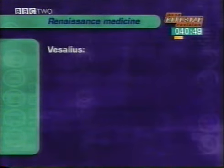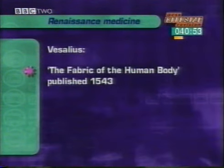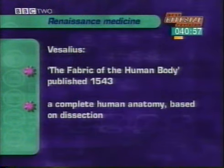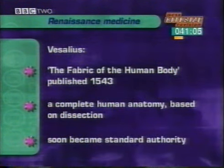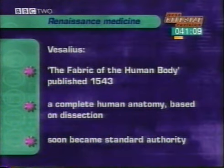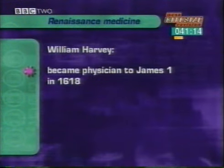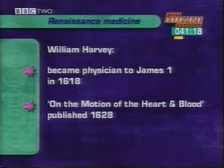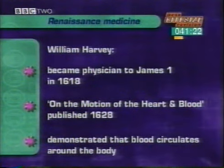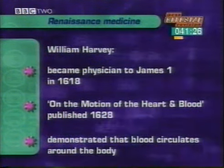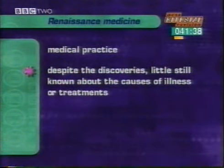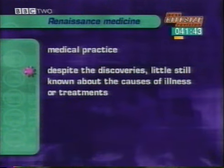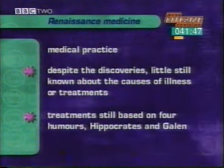Here are the main points. Vesalius' great book, The Fabric of the Human Body, was published in 1543 — a complete human anatomy based on dissection, soon available in every medical school in Europe. William Harvey became physician to King James I of England in 1618. His book, On the Motion of the Heart and Blood, published in 1628, demonstrated for the first time that blood circulates round the body. Later in the 17th century, observations with the newly invented microscope confirmed Harvey's theory by enabling the smallest blood vessels to be seen. However, the great discoveries of Renaissance medicine had little effect on how ill people were treated — even Vesalius and Harvey had little to say about the causes of illness or treatments. Doctors still based treatments on the four humours, Hippocrates and Galen.